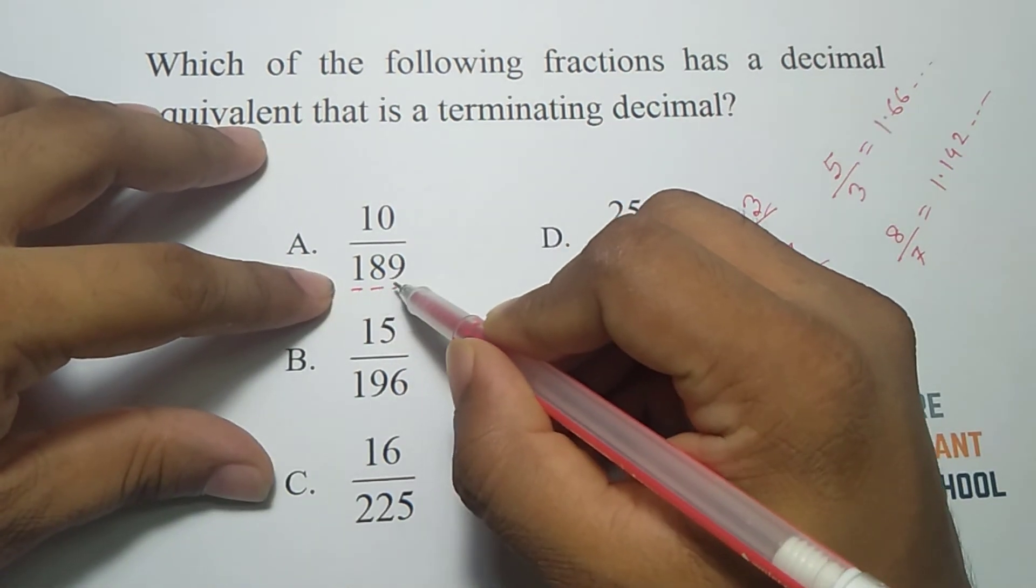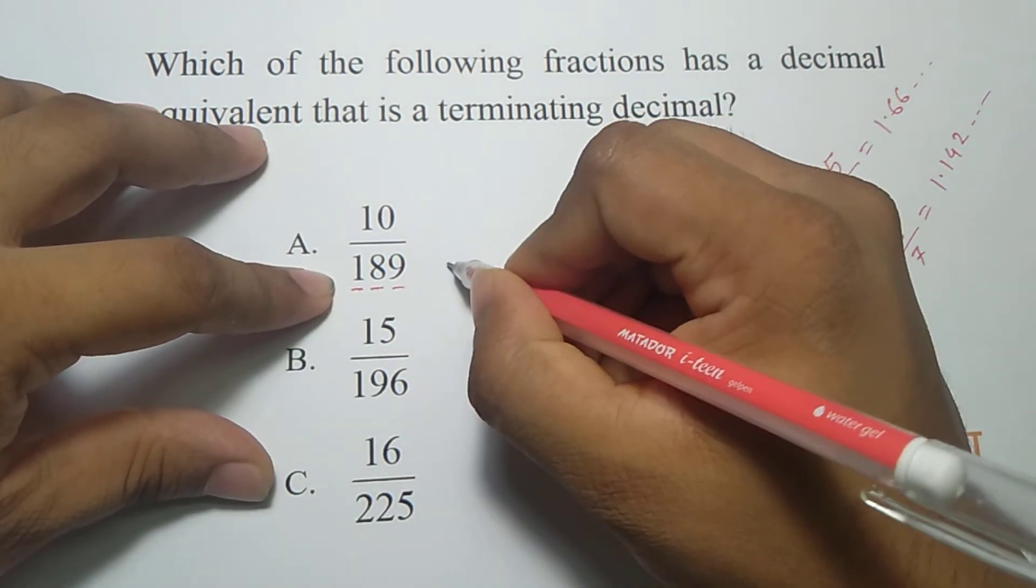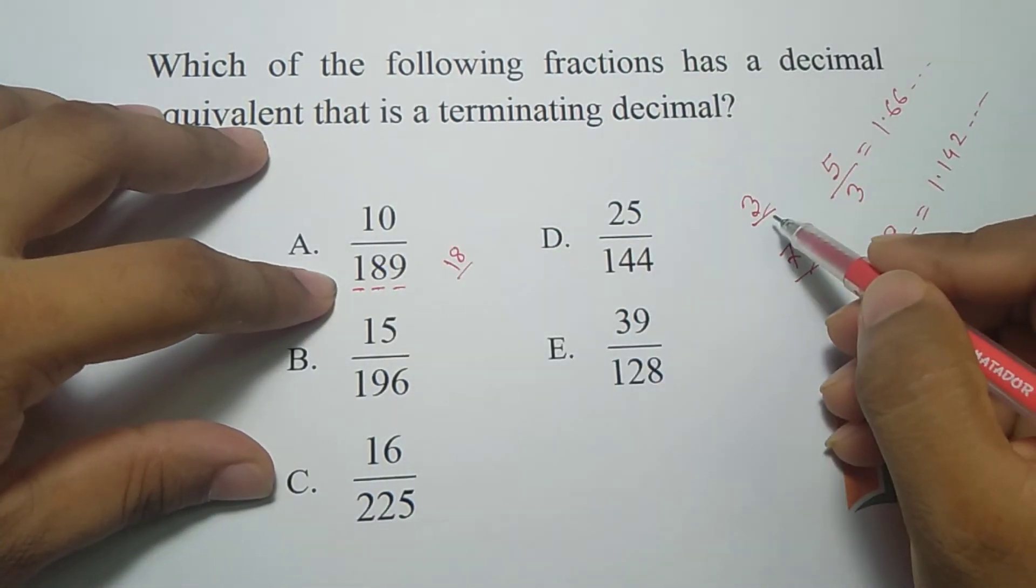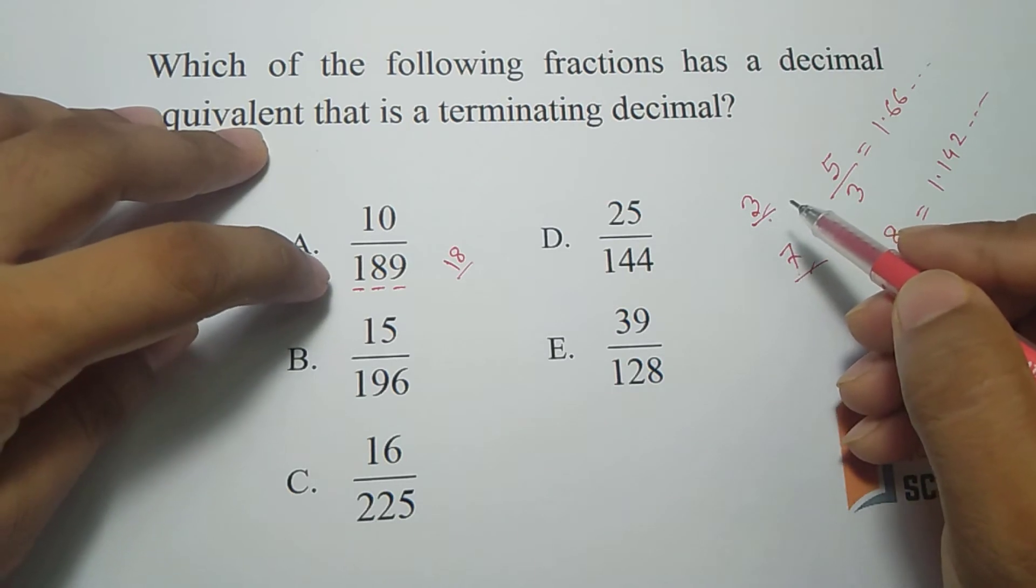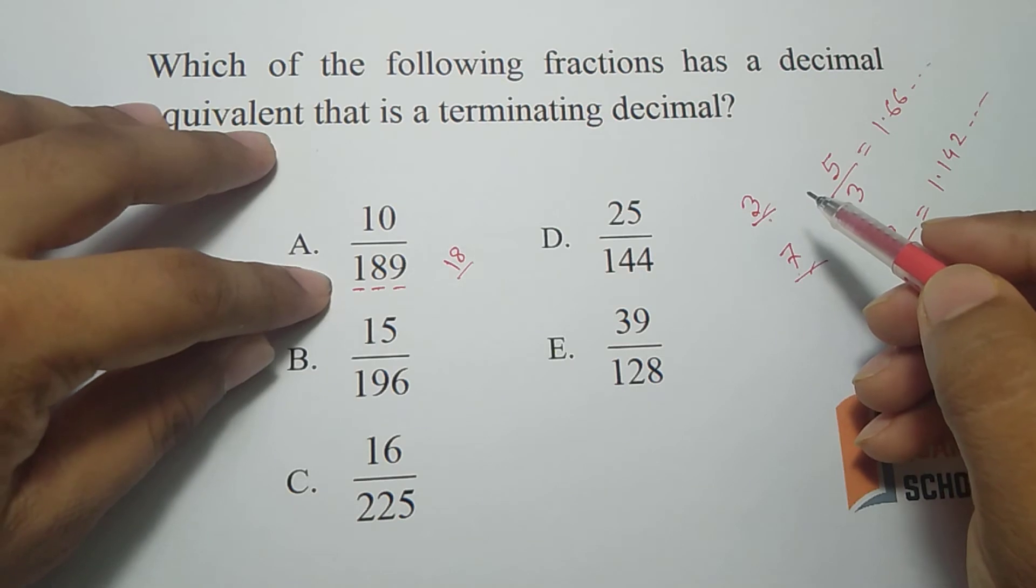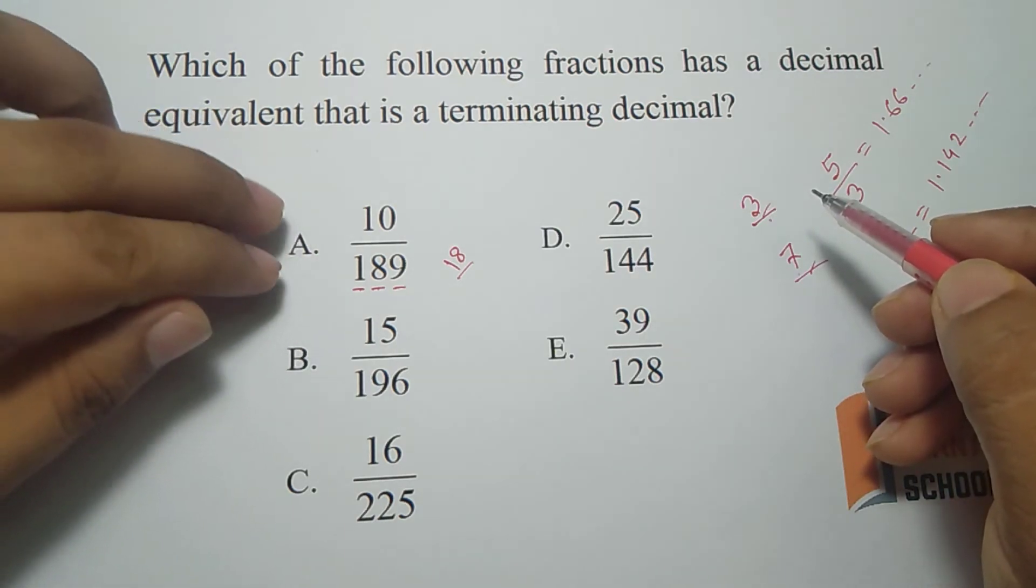Here 1 plus 8 plus 9, that is 9 plus 9 is 18, it's divisible by 3 so the number is also divisible by 3. So we can say there is at least a 3 in the denominator so this fraction will make a non-terminating decimal.